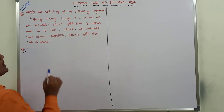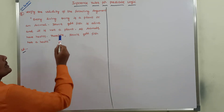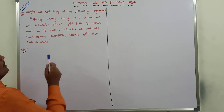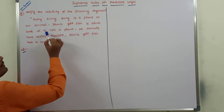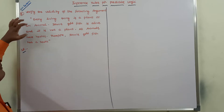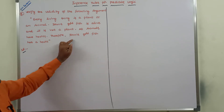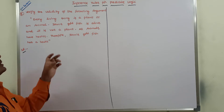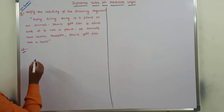The problem is: every living thing is a plant or an animal — this is the first statement. John's goldfish is alive and it is not a plant — this is the second statement. All animals have hearts — this is the third statement. Therefore, John's goldfish has a heart — this is the conclusion. We have to verify whether these statements derive this conclusion. If they do, it is a valid argument.